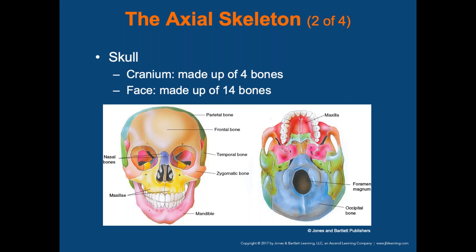That large opening at the base of the skull is called the foramen magnum — where the spinal cord connects to the skull. The spinal cord connects through cervical vertebrae, including C1 and C2, called the atlas and axis. Any deviation or severance at that level causes immediate death. A way to remember it: C3, 4, and 5 keep the body alive.